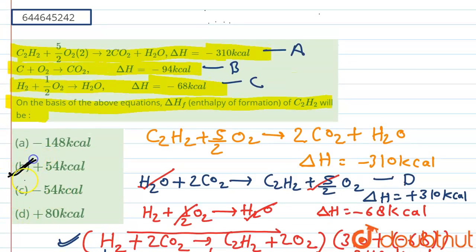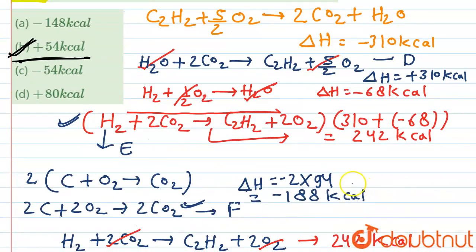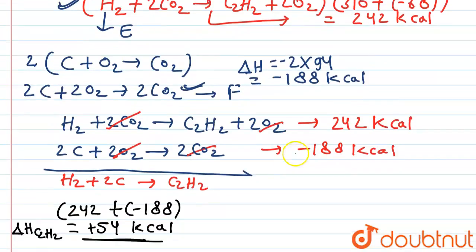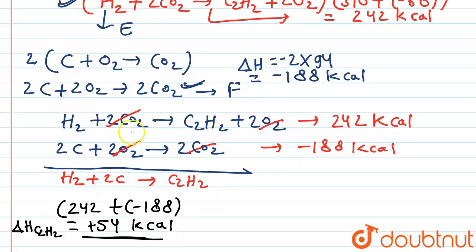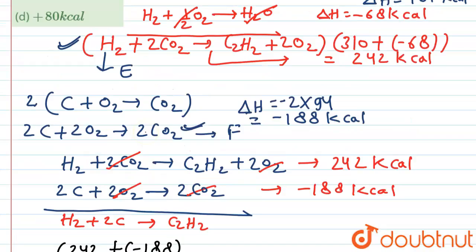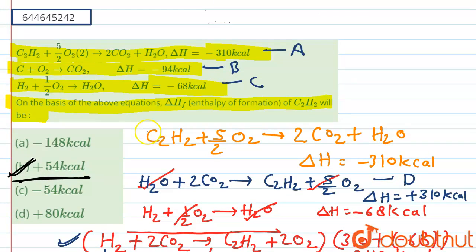Checking the options, option P is correct: plus 54 kilocalorie. This is the way to calculate the enthalpy of formation by manipulating the given reactions using Hess's Law and performing the required calculations.